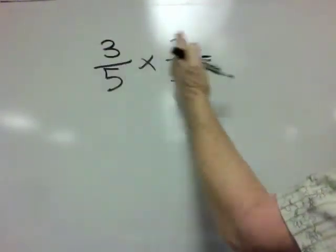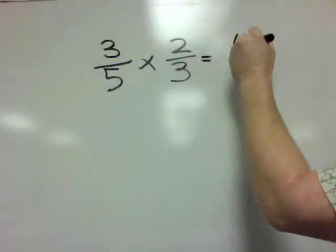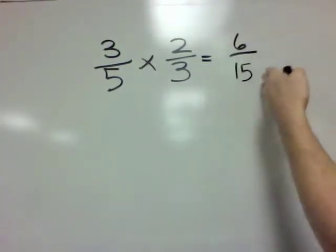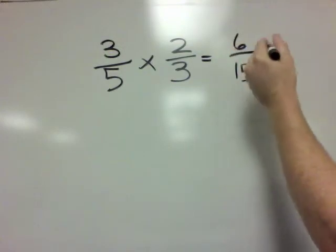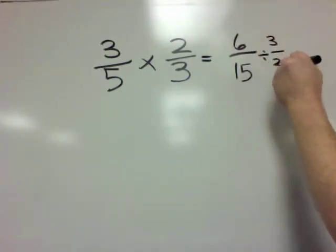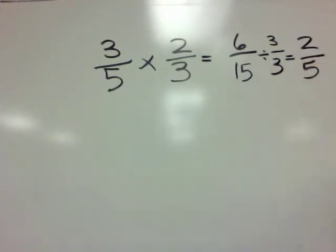It's pretty quick and easy. So 3 times 2 is 6, 5 times 3 is 15, but then you see that this fraction can be reduced and we can divide this fraction by 3 over 3 which gives us 2 fifths.